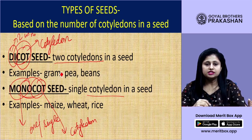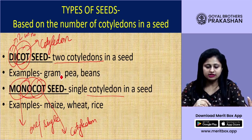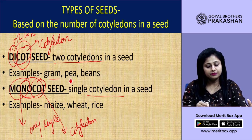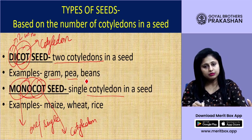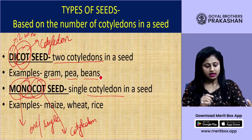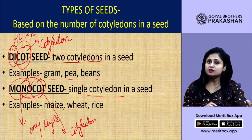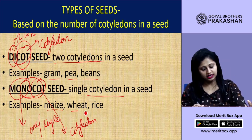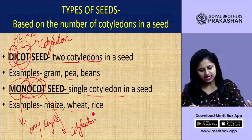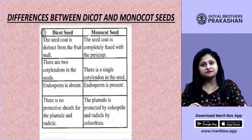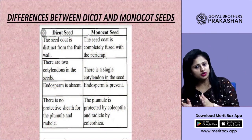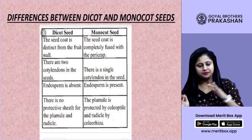Examples of dicot seeds are gram, pea, and beans. Examples of monocot seeds are maize, wheat, and rice. Differences between dicot and monocot seeds follow.